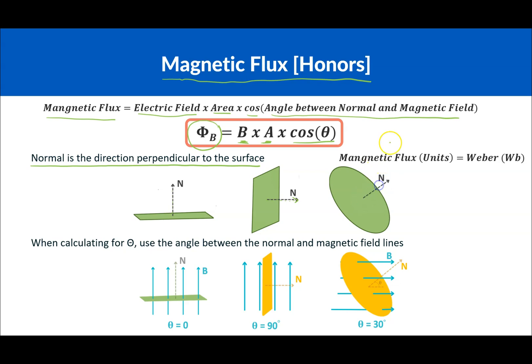Okay, so just a little bit about what normal means. One thing I should mention is magnetic flux, the units for that is Weber. We use WB for that. Okay, so when we're going to calculate theta, this is kind of the tricky part, is we use the angle between the normal and the magnetic field.